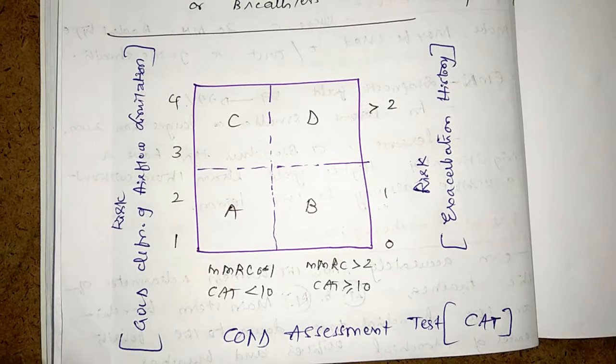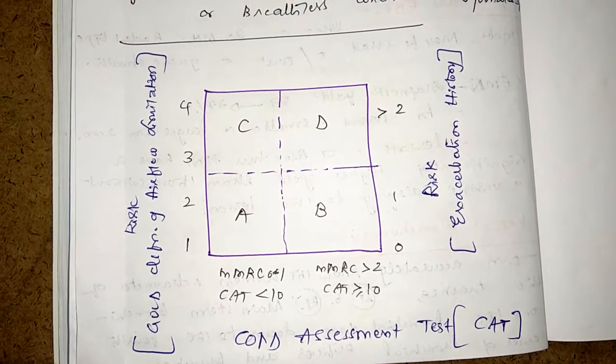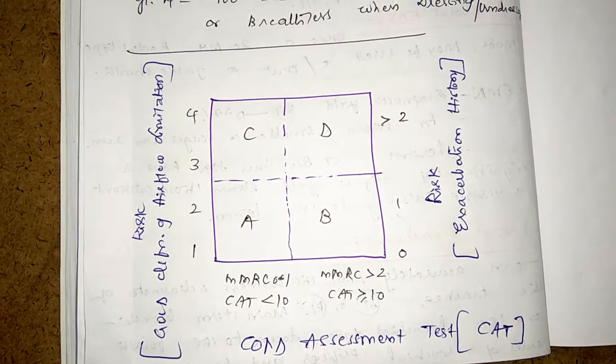In A there is low risk and less symptoms, in B low risk more symptoms, in C high risk less symptoms, in D high risk more symptoms.